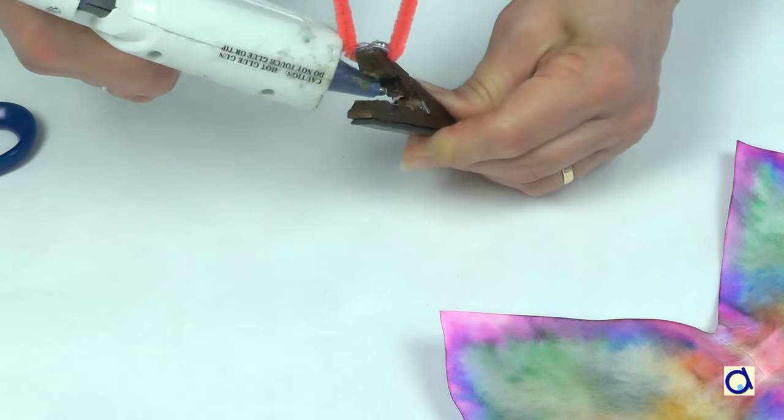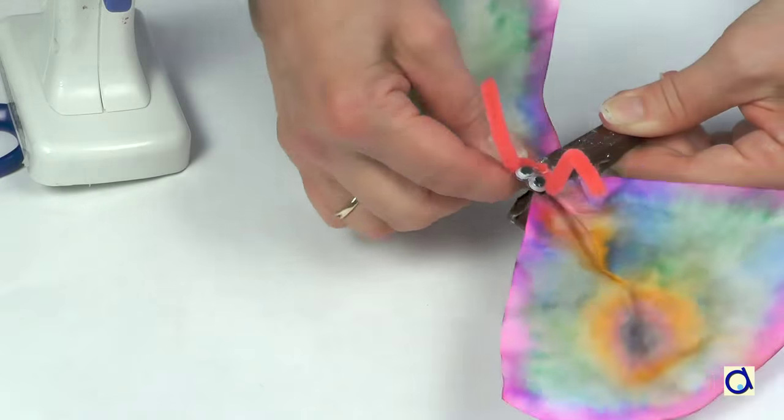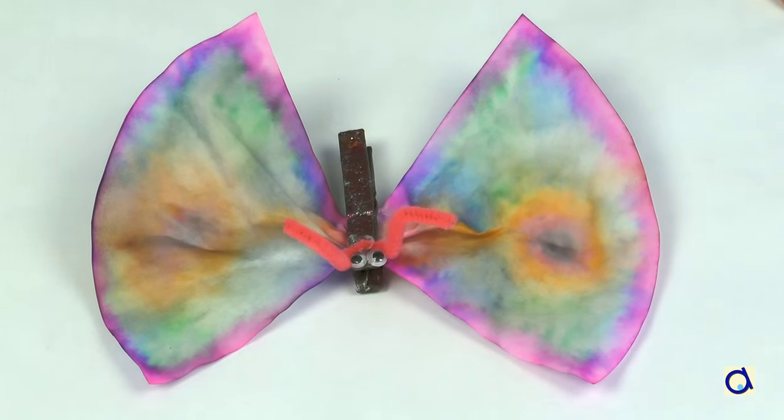Finally, open the clothespin, put hot glue inside and put the wings in place so that they are centered with respect to the body. And now your butterfly is ready!